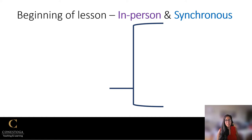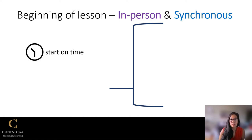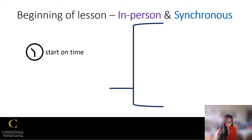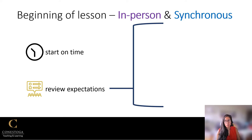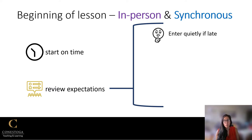When beginning a lesson, whether it's in-person or synchronous, we always want to make sure we get into the habit of starting on time. This will let students know that starting on time is important and that they should arrive on time. Another piece is reviewing expectations for students — for example, telling students that if they arrive late, they should do so quietly without disrupting other students, whether it's a Zoom, Teams, or in-person class setting.